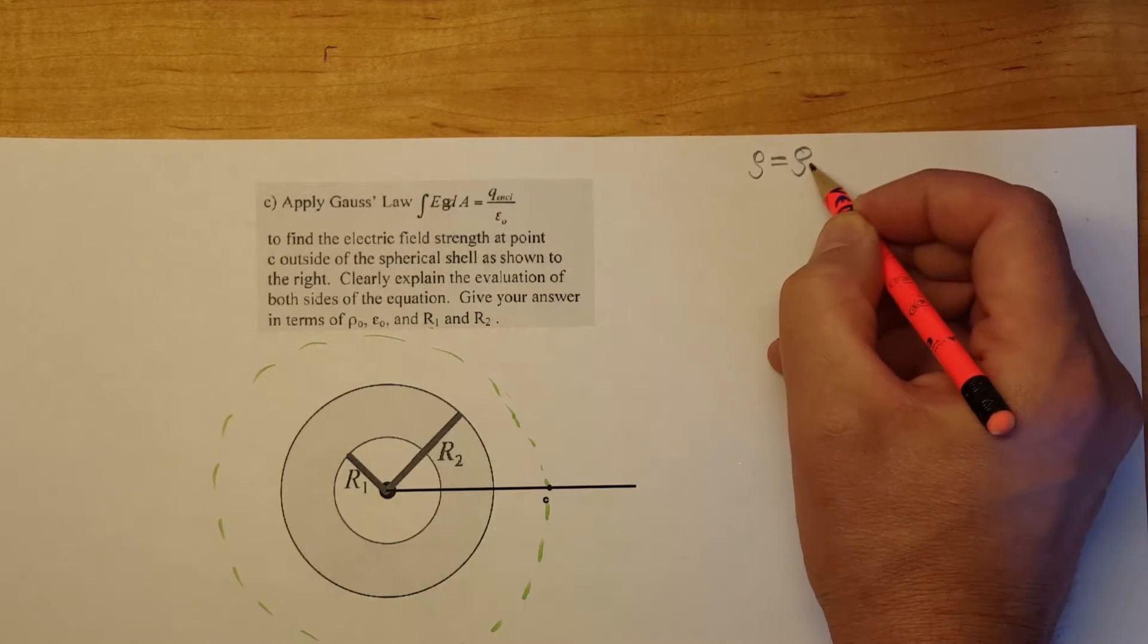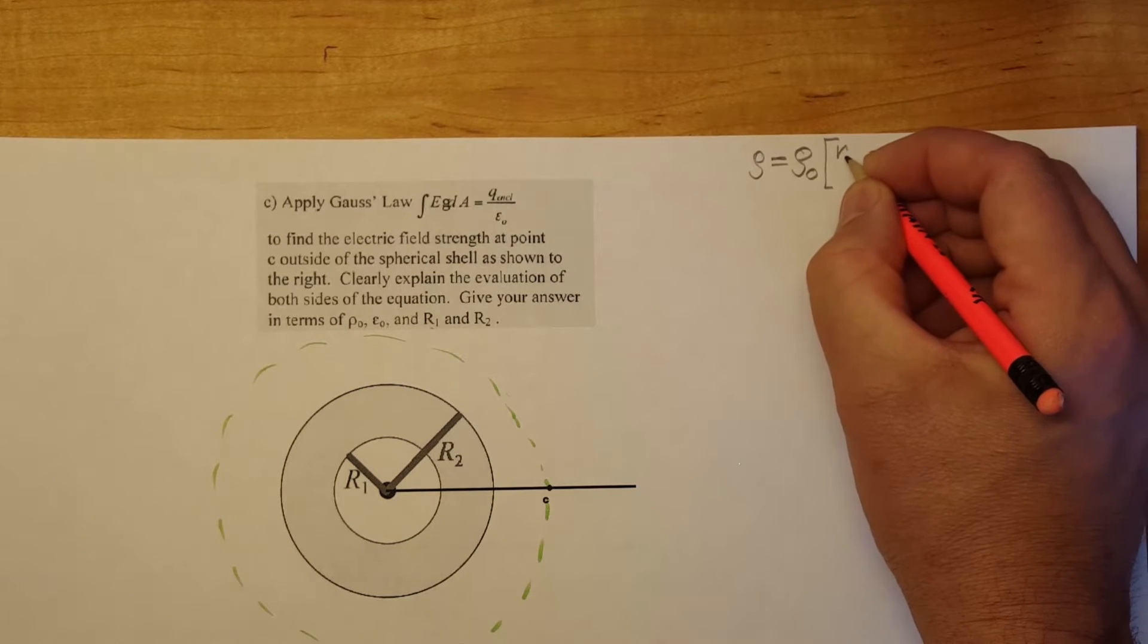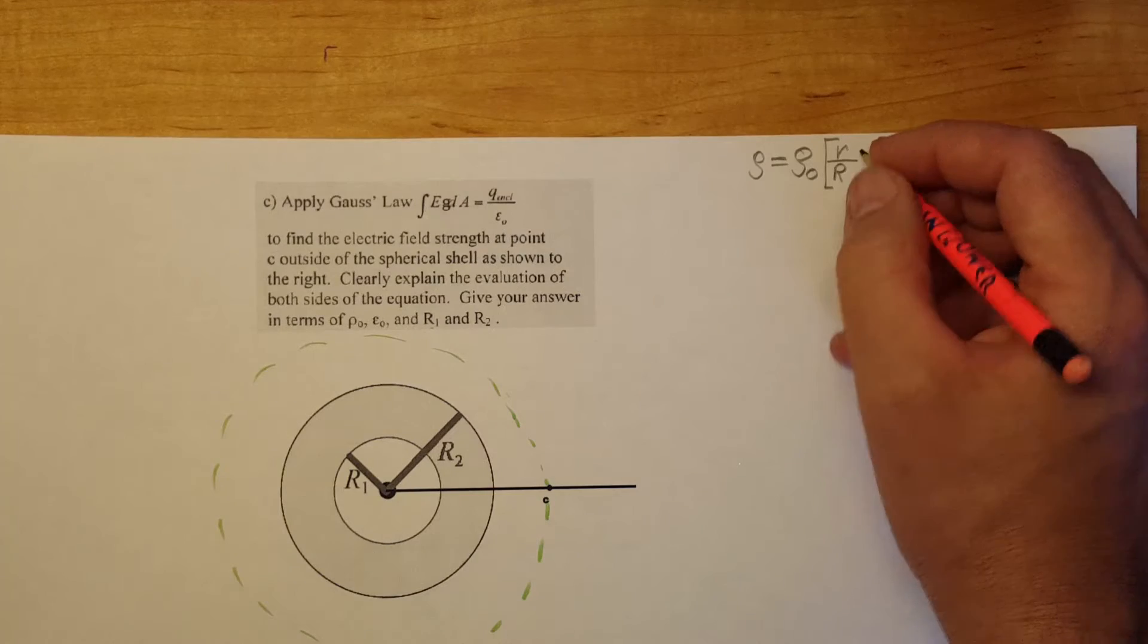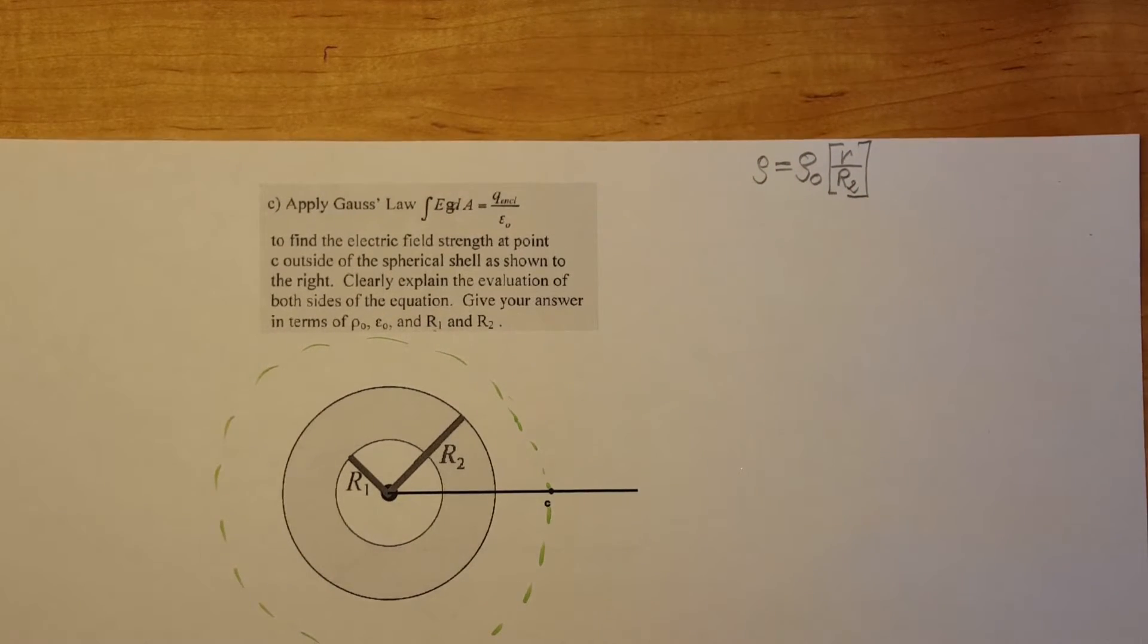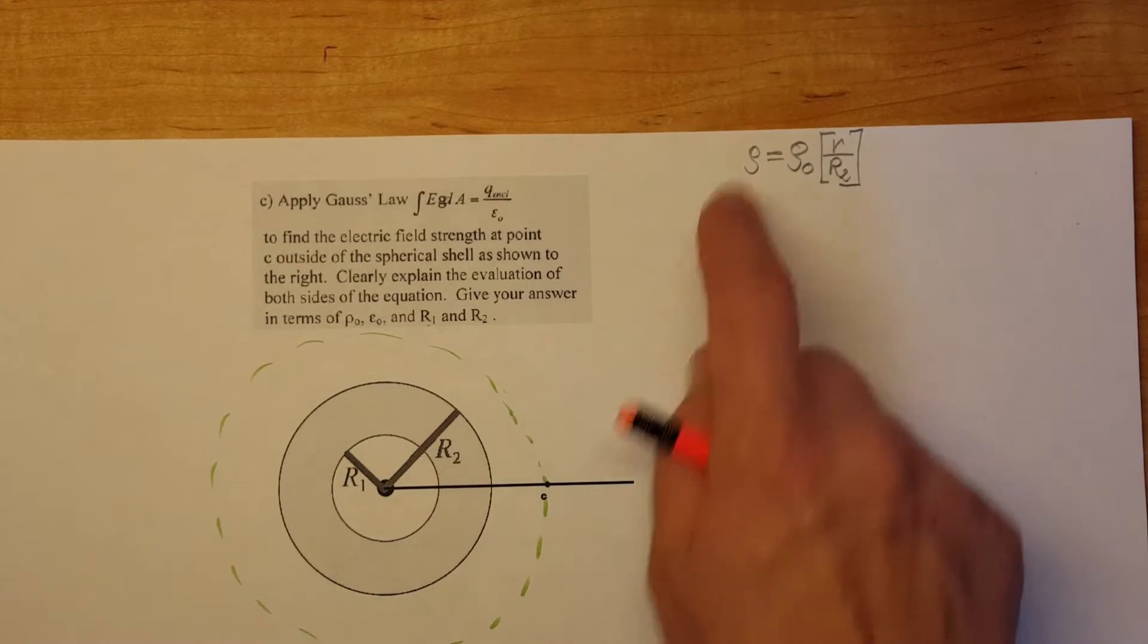Rho equals Rho naught times R over big R and I believe it was Rho plus 2. Yes, Rho. This is our varying charge density.